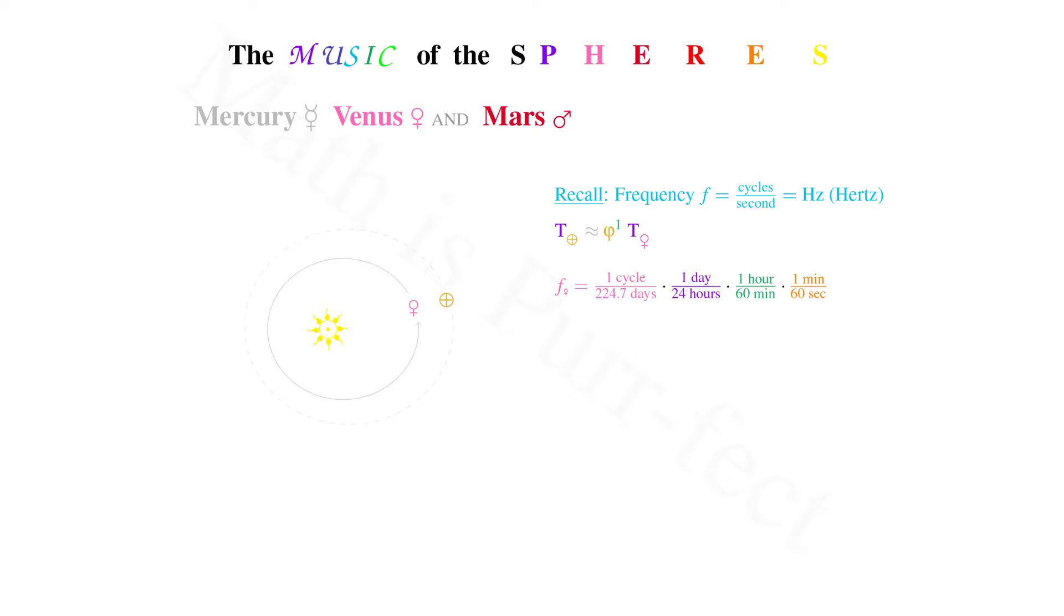Converting from days into seconds, and reducing our units, we arrive at a frequency of one cycle every 19,414,080 seconds, or 5.1 times 10 to the negative 8th hertz. This frequency must be raised 32 octaves to be heard, hence multiplying through by 2 to the 32nd power yields a frequency of 221.2295044 hertz, approximately an A.